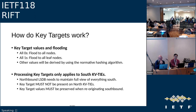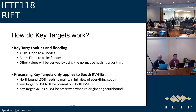How do key targets work? We have two special values: all zeros means flood to everything, and all ones means flood to all leaf nodes. Any other values — a subset of the fabric — will be derived using the normative hashing algorithm. It really only makes sense to process these on south KV ties; the northbound LSDB still needs to maintain a full view of everything southbound. So key target must not be present on northbound KV ties at all, and any southbound re-origination as we go through the levels, the key target must be preserved as well.